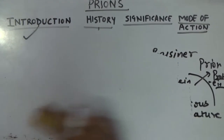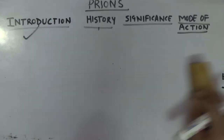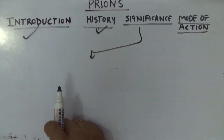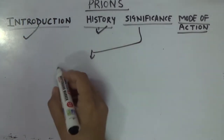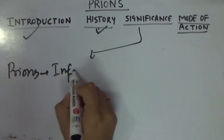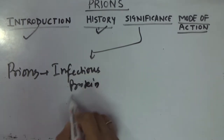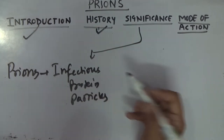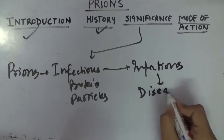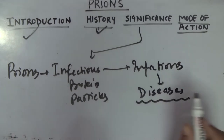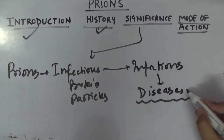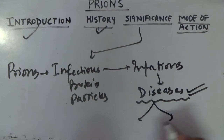Now moving to significance. Significance is very important when studying any microbial group. Prions are infectious protein particles which are able to cause infections, and these infections can result in diseases. This is their importance in microbiology — prions have been included as an important microbial group because of their ability to cause diseases.